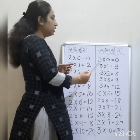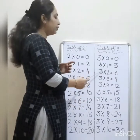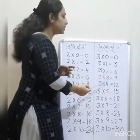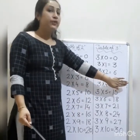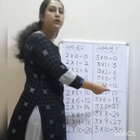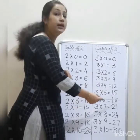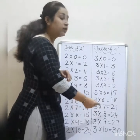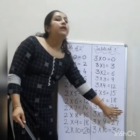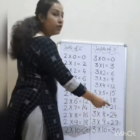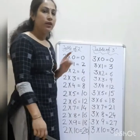Okay. Table of 3: 3 0's are 0, 3 1's are 3, 3 2's are 6, 3 3's are 9, and 3 4's are — tell me, hurry up. 12. Very good. 3 4's are 12, 3 5's are 15, 3 6's are 18, 3 7's are 21, and tell me 3 8's are — hurry up. 24. Very good. 3 8's are 24, 3 9's are 27, and 3 10's are 30.